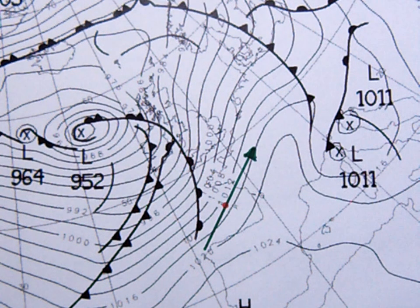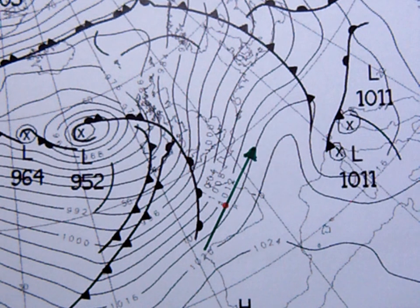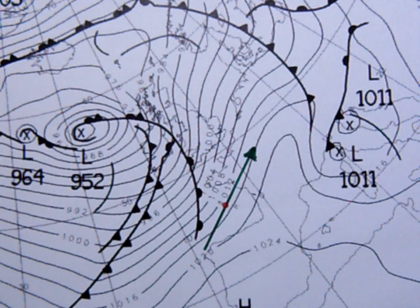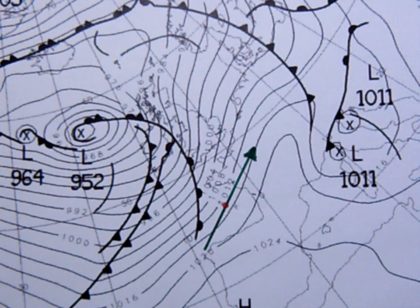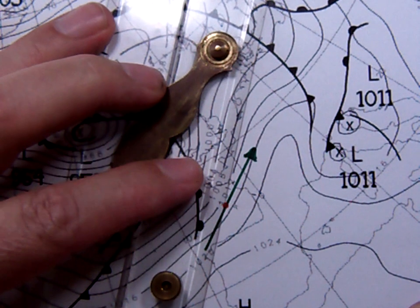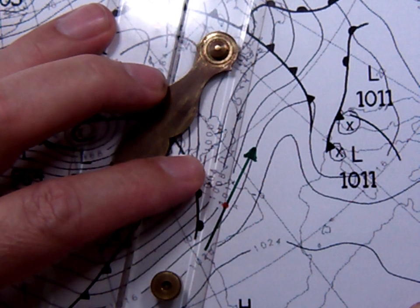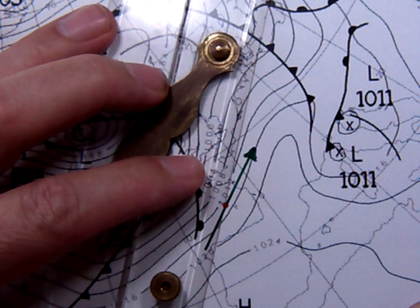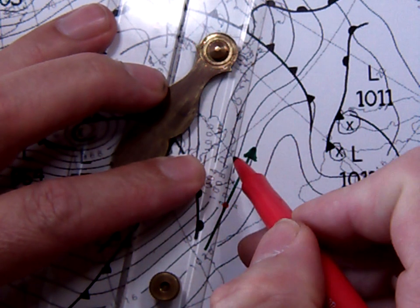At the surface, however, we approximate the inflow to be about 20 degrees over the sea. So what I'm doing here is I'm going to draw another line approximately 20 degrees going towards the lower isobar, swiveling through my point.